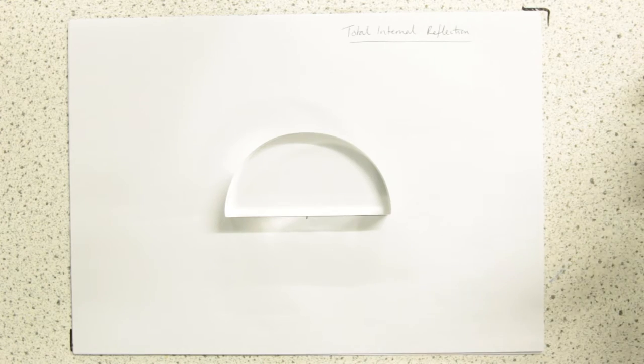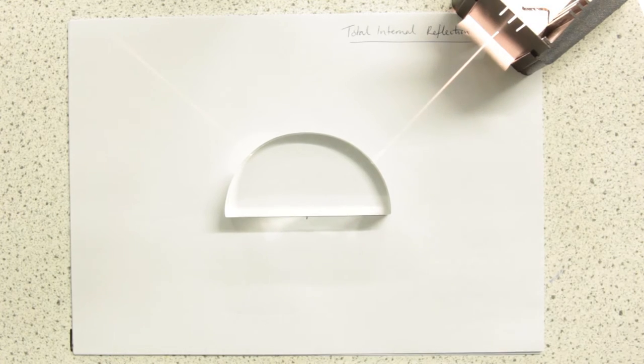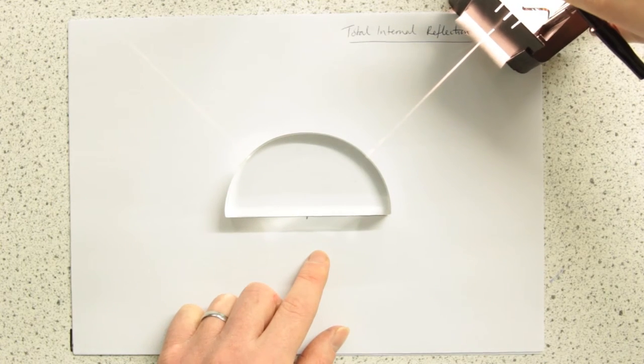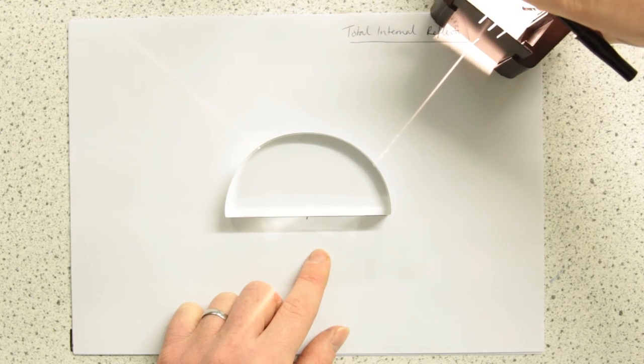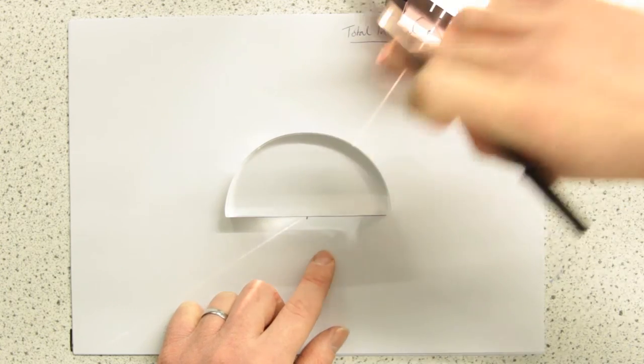And it means that it's always coming in, the ray of light, at 90 degrees to the surface. If it wasn't aiming at midpoint, it wouldn't be 90 degrees, and you would have some refraction going on here.